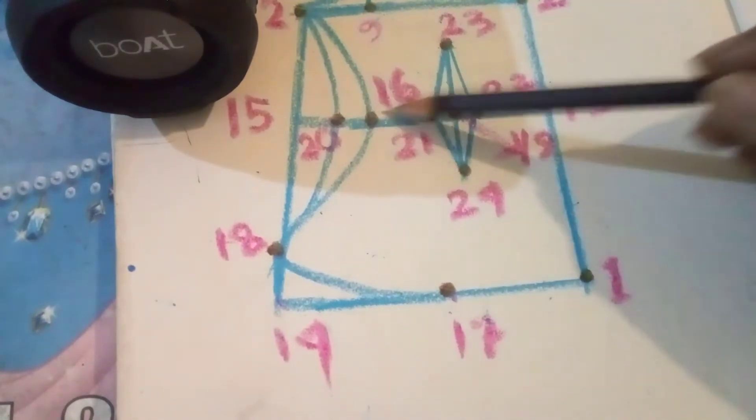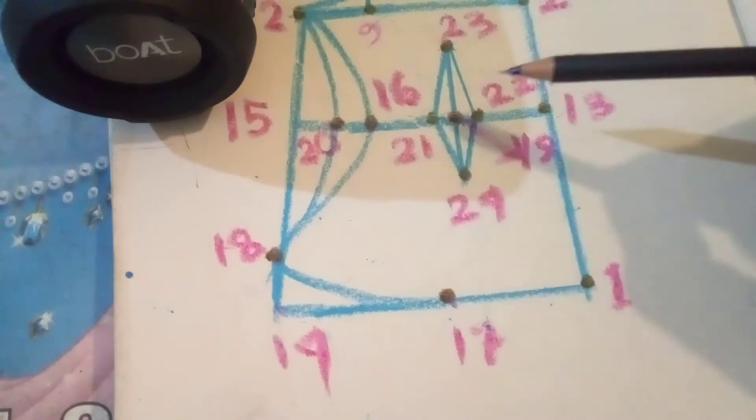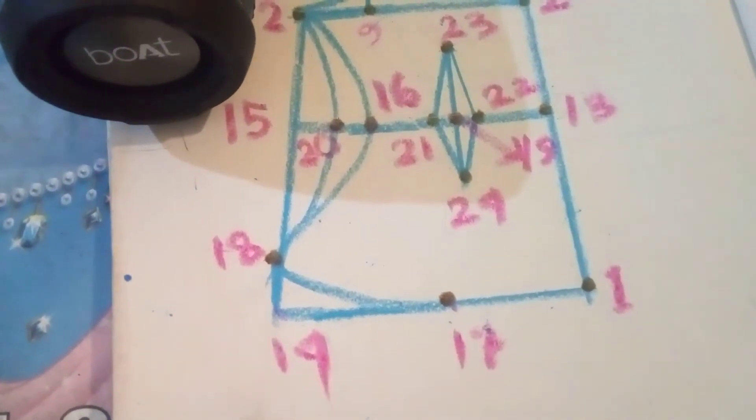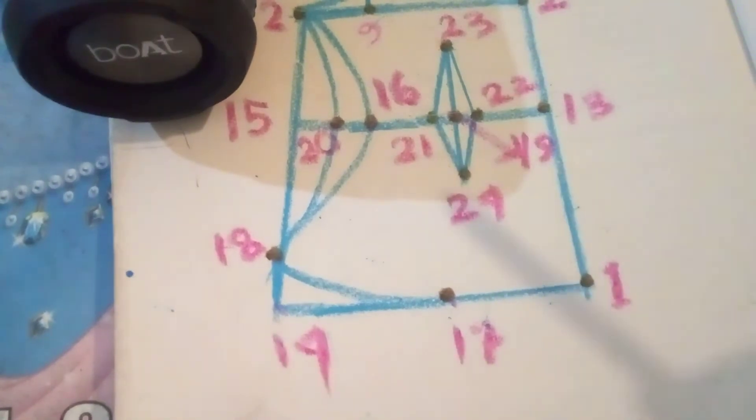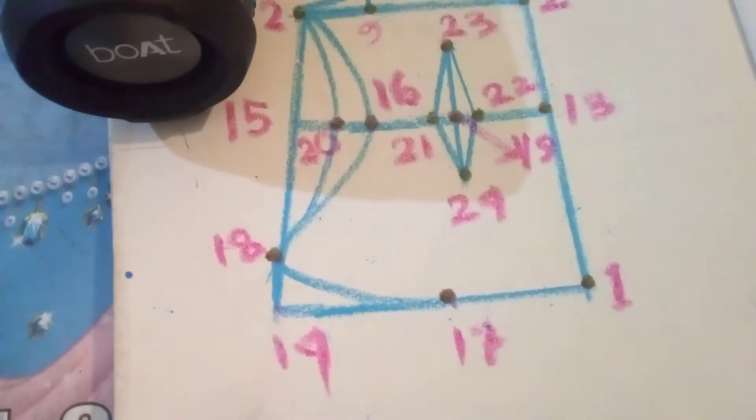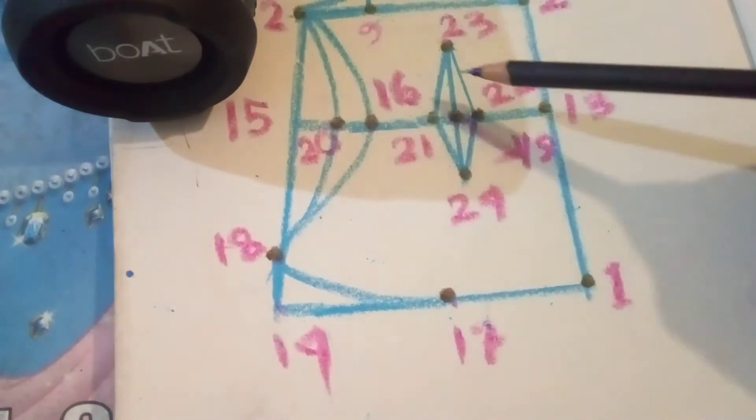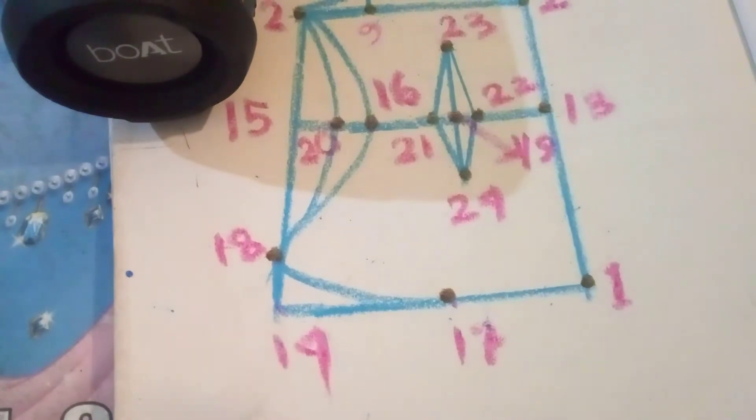Here I am going to use middle point. This is 13 and 16, this middle point. Write down 13 to 16. Take a midpoint. New point is 19. So 13 to 16, take a midpoint, new point is 19.